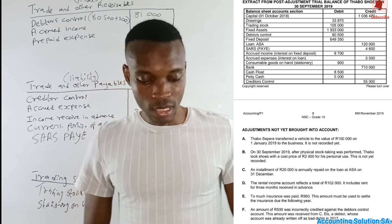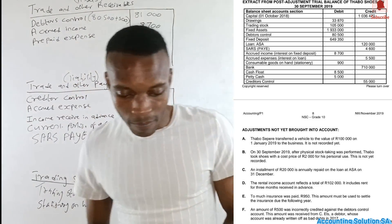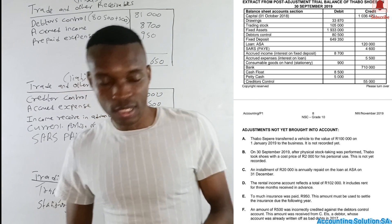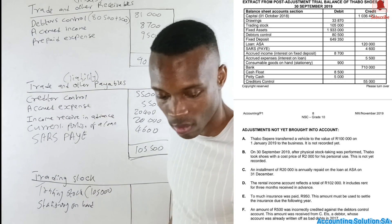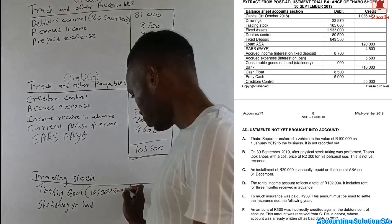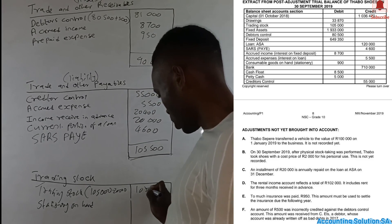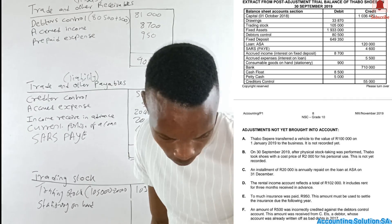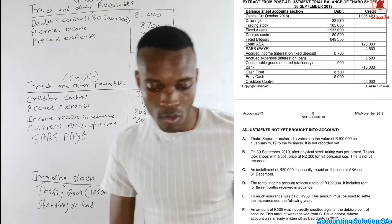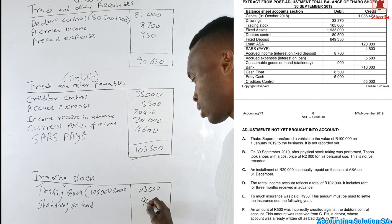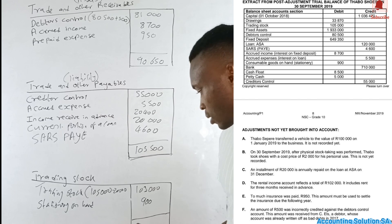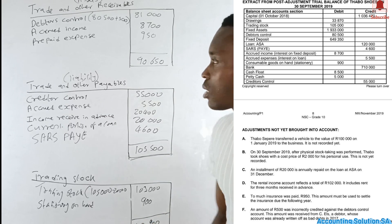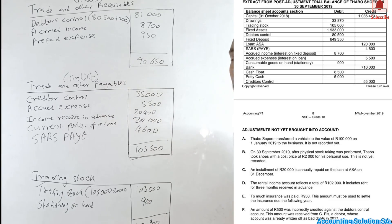From adjustment B: on 30 September 2019 after physical stock-taking, the owner took goods with a cost of 2,000 for personal use, not yet recorded. We subtract 2,000, giving us 103,000. We also check for stationery on hand — we have maple store stationery of 900, which we add as is. The final trading stock note total is 103,900.